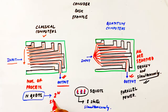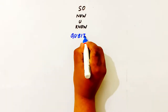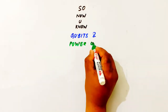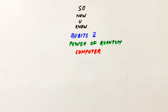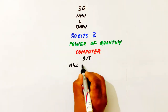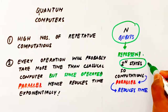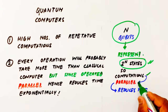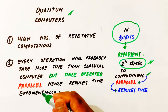N qubits can represent 2 to the power n states together, and we can process all 2 to the power n states simultaneously. N qubits have 2 to the power n combinations in our computation — that is the power of quantum computers.